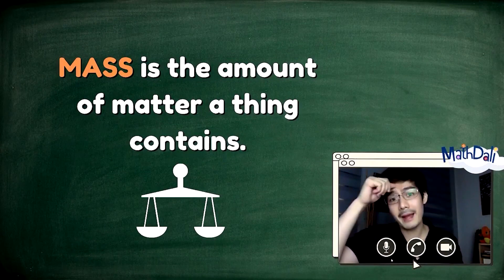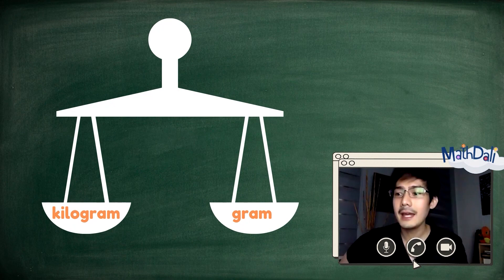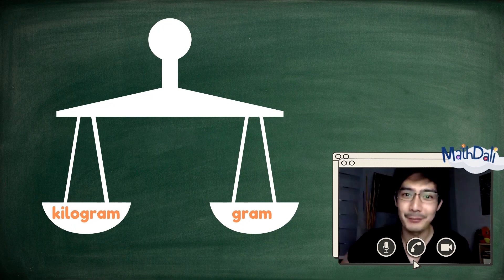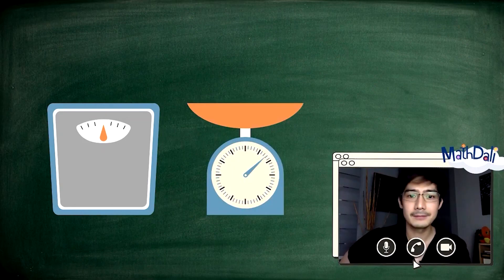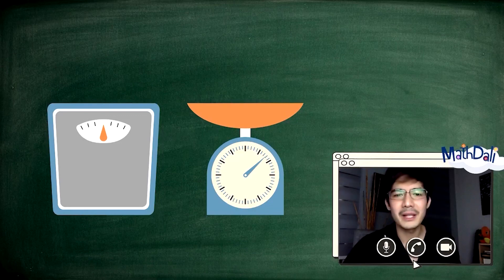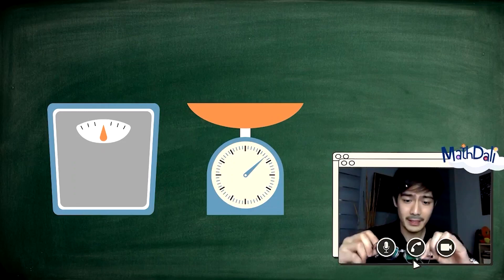We can measure mass in terms of grams and kilograms. Gumagamit tayo ng bathroom scale, weighing scale, o timbangan para makuha ang mass ng isang object. Ano ba itong gram na ito? Itong kilogram na ito?